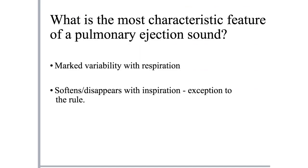The most important feature of a pulmonary ejection sound that differentiates it from an aortic ejection sound and from a vascular ejection sound is marked variability with respiration. With inspiration, this ejection sound softens or disappears. This is an anomaly, because usually all right-sided events increase in intensity on inspiration. The only exception to this rule is the pulmonary ejection sound, which softens or disappears with inspiration and becomes louder with expiration.